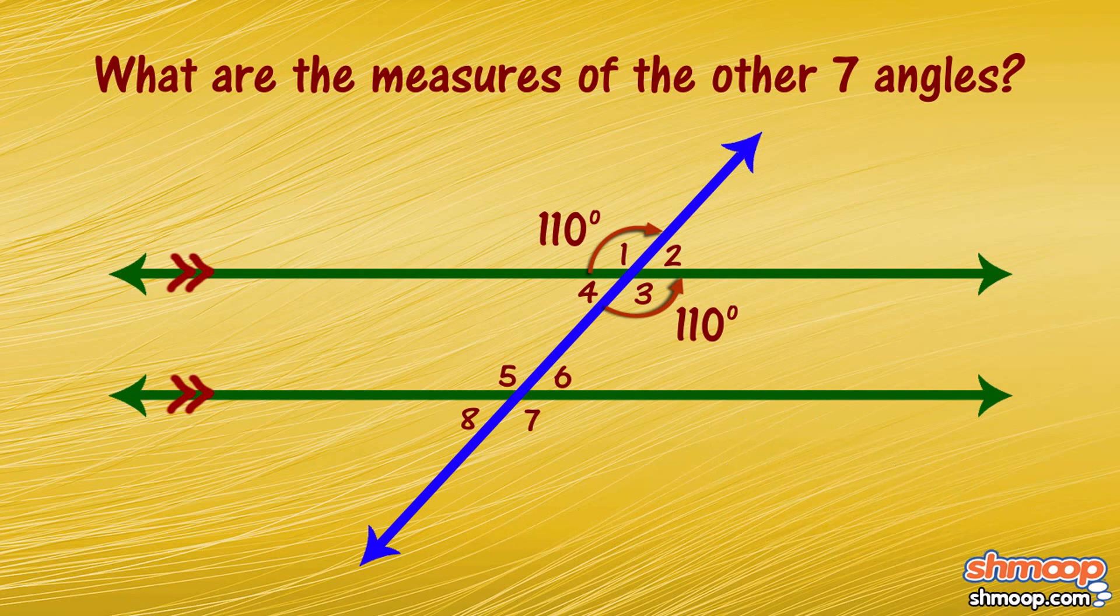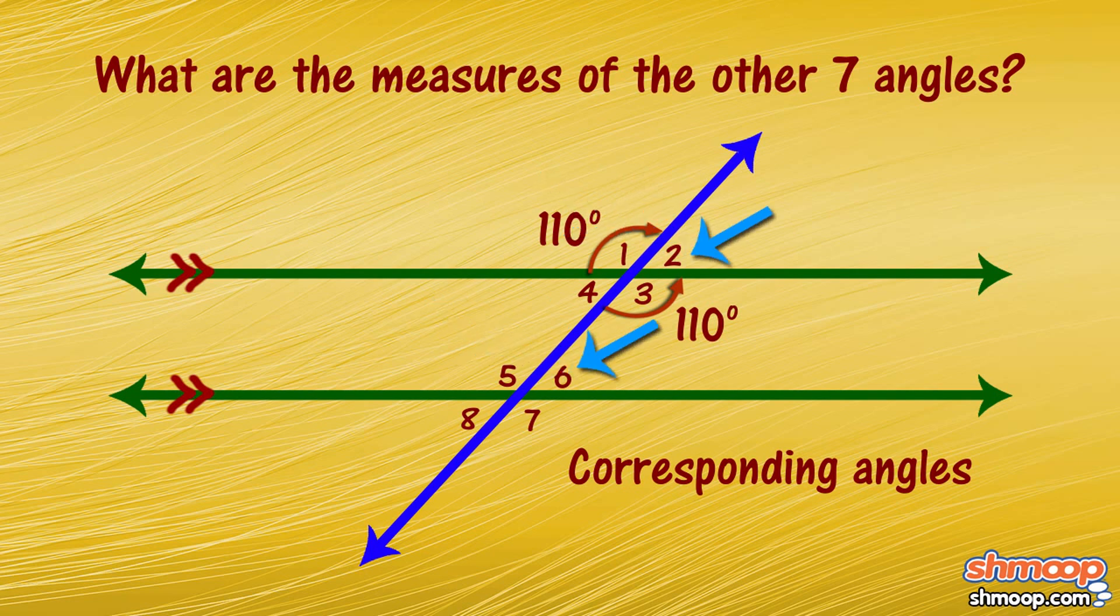It also helps to know that corresponding angles, or angles that are in the same position relative to the parallel lines and the transversal, are also congruent. In this case, the corresponding angle to angle one is angle five. So angle five is also 110 degrees.